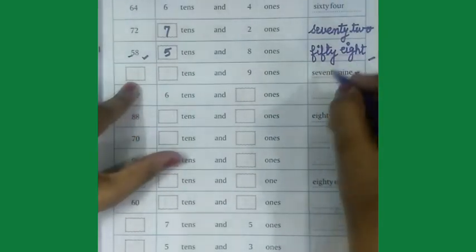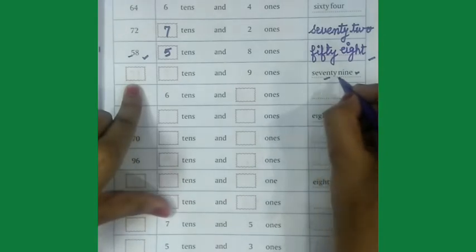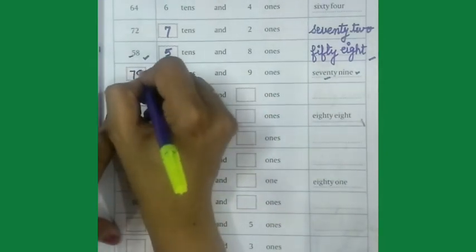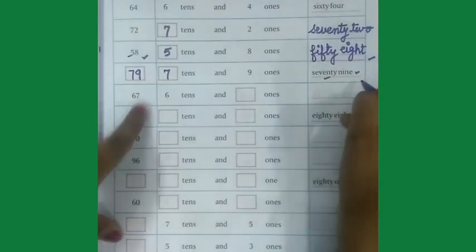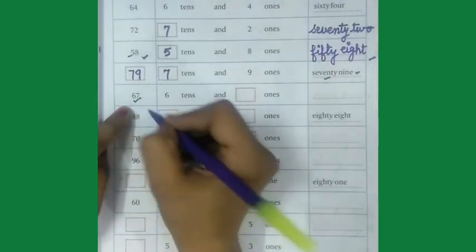Come on next one, number name is already written here, 79, so I will write here 79, 7 tens and 9 ones.